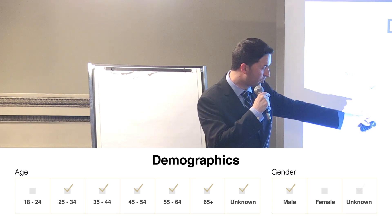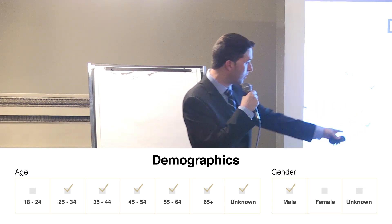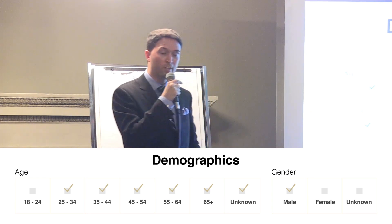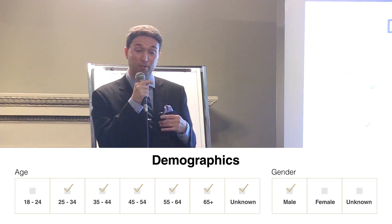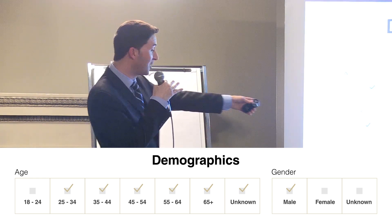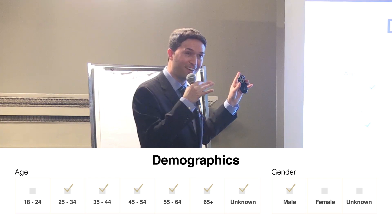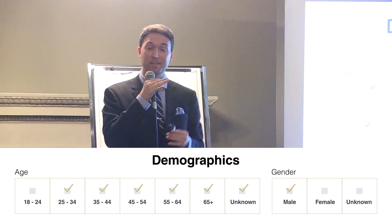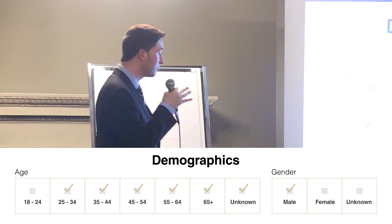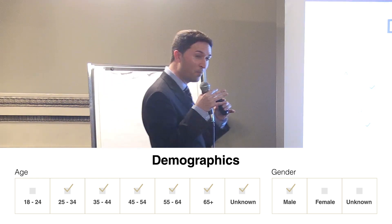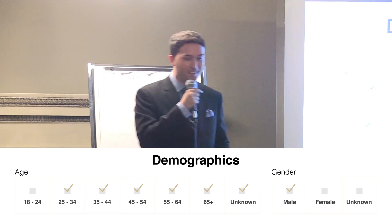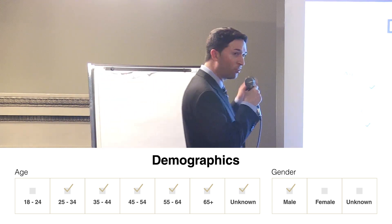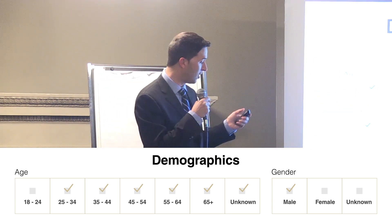If you only have male customers at your dojo, you can uncheck the other gender options. What about the unknown checkmarks? If someone's gender is unknown, they can pick unknown — that's fine. So with these demographics, you have really targeted options. This is awesome.